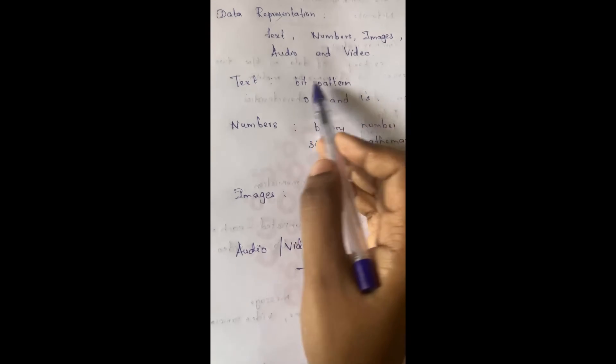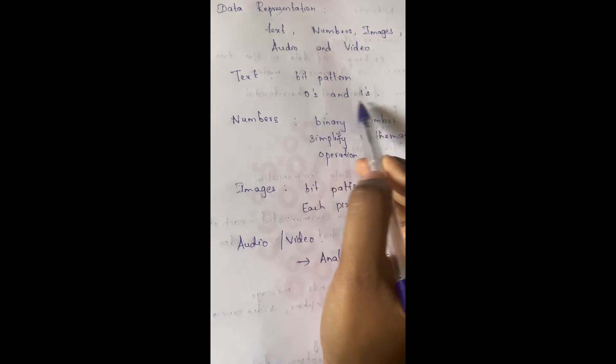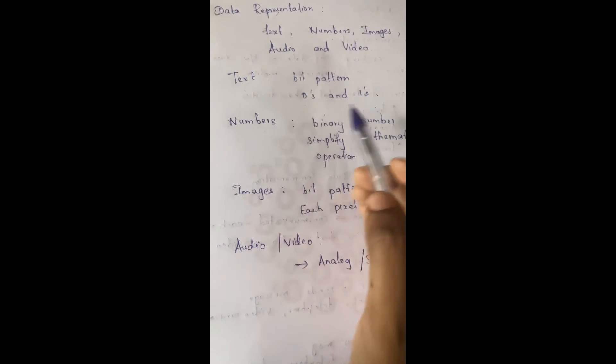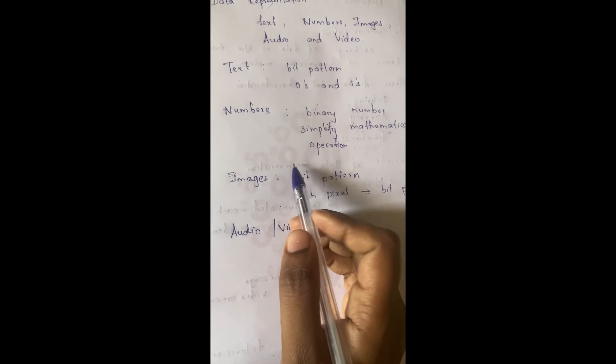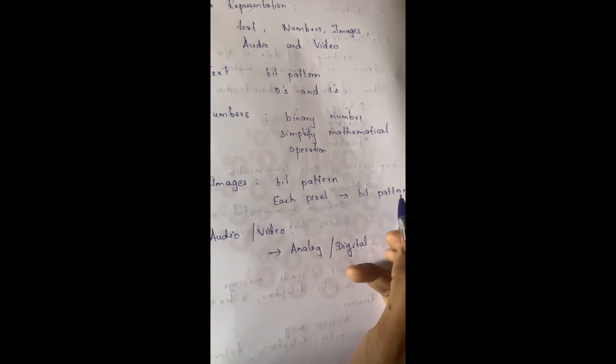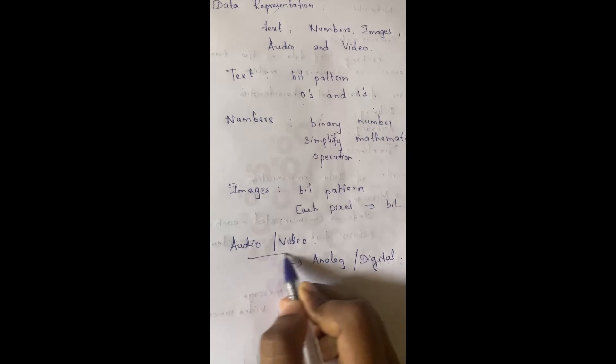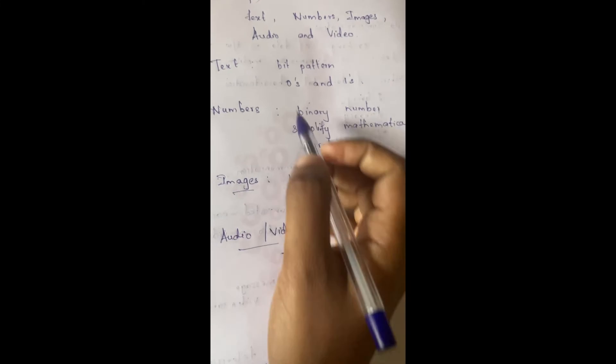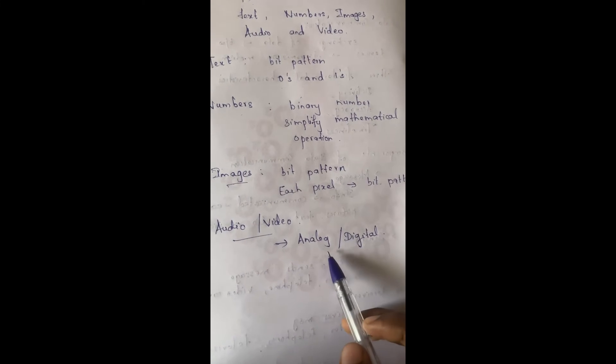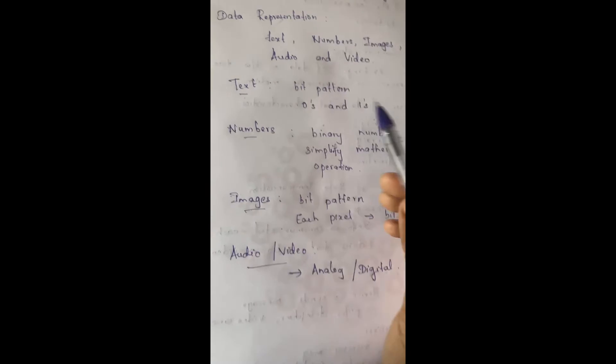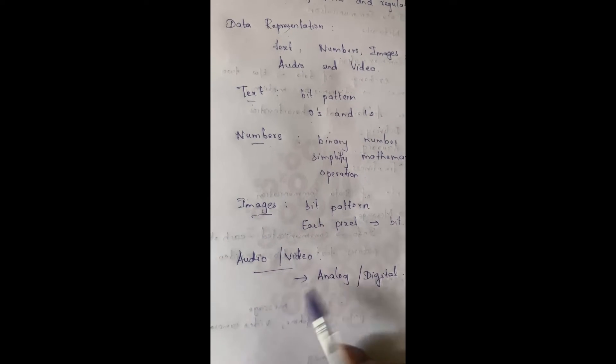So in summary: text can be in the form of bit pattern that is zeros and ones; numbers will be converted into binary number to simplify mathematical operations; images will be in the form of pixels and each pixel carries a bit pattern; and audio and video are converted in the form of analog or digital.